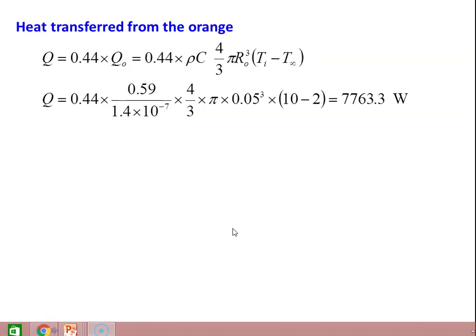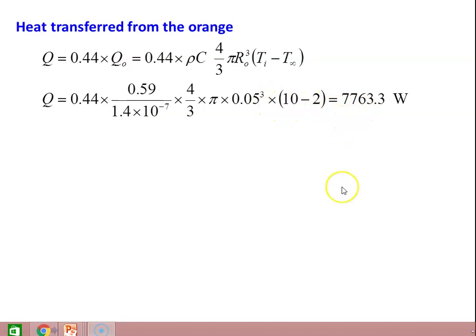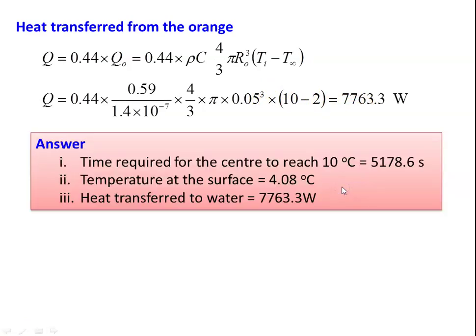The heat transfer from the orange: Q = 0.44 × Q_o = 0.44 × ρ·c × (4/3)·π·r_o³ × (T_i − T_∞). Substituting: ρ·c = k/α = 0.59 / (1.4 × 10⁻⁷), volume = (4/3)·π·(0.05)³, and (T_i − T_∞) = 30 − 2 = 28°C, giving Q = 7763.3 watts. Summary: time for center to reach 10°C = 5178.6 s, surface temperature = 4.08°C, heat removed = 7763.3 W.